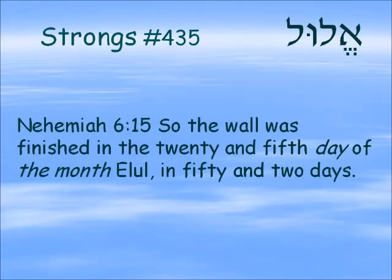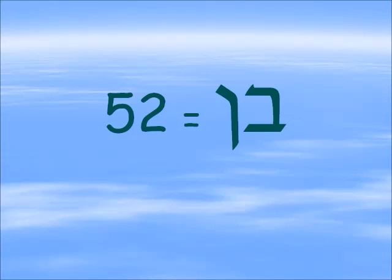Elul is traditionally the month of repentance. In the Jewish calendar, you can see a pattern of 40 days of repentance running from the first of Elul until Yom HaKippurim, the Day of Atonement, the 10th day of the following month. The number 52 is significant — it is the gematria for the word ben. A ben is a son that comes from the root bana, which means to build, to build a house. So I think the 52 days of finishing the wall, the building, and the coming of the Son, S-O-N, are all connected.